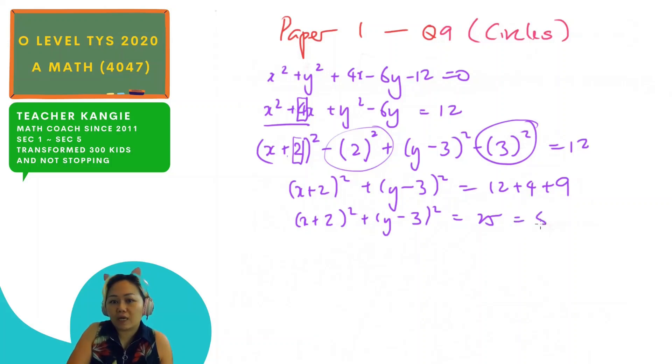So in the end, I get x plus 2 squared plus y minus 3 squared equals to 25, equals to radius squared. So I will put it as 5 squared. So in this case, I will know that my center will be equals to minus 2, 3. And then my radius will be 5. And put the unit, which is just units. So this is the two answer for question 9 part 1.